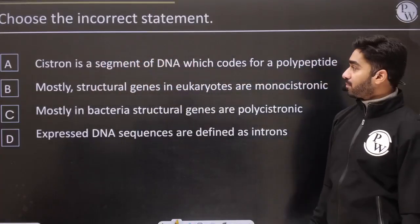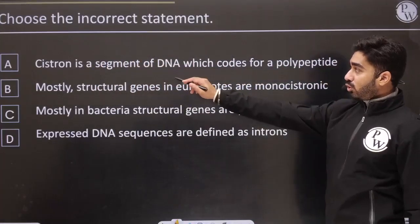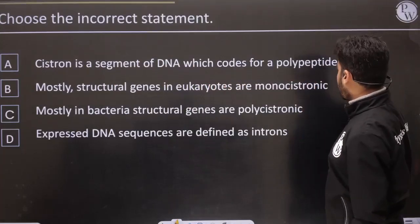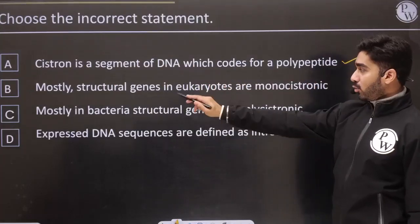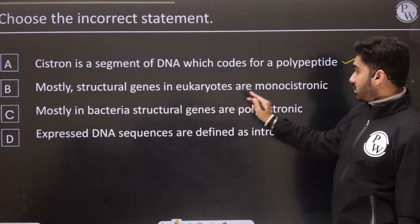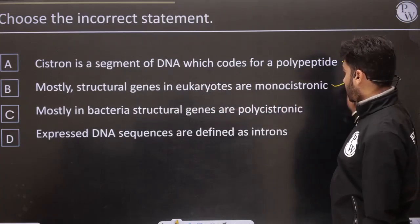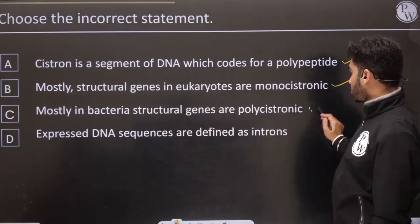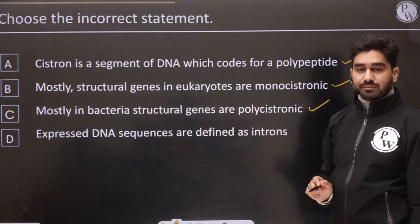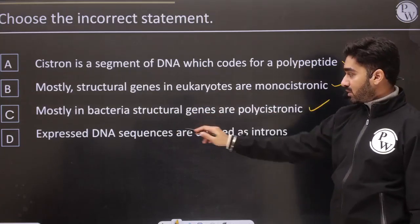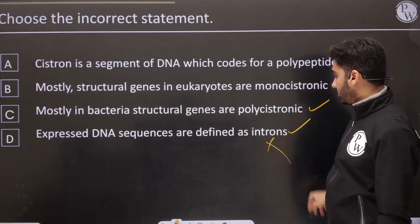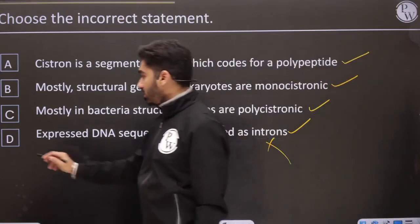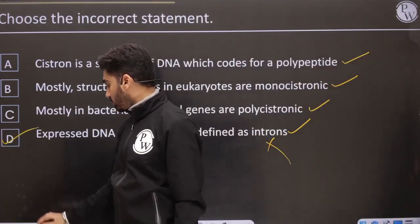Choose the incorrect statement. Cistron is a segment that codes for a polypeptide — correct. Mostly structural genes in eukaryotes are monocistronic — correct. Mostly in bacteria, structural genes are polycistronic — correct. Expressed DNA sequences are introns — incorrect. The ones that are expressed are called exons. So this is the incorrect statement.